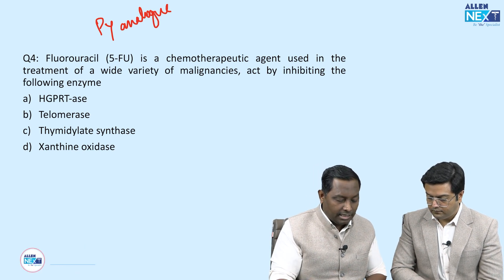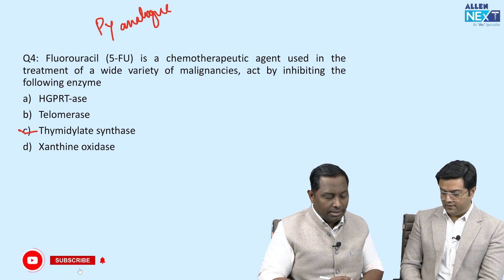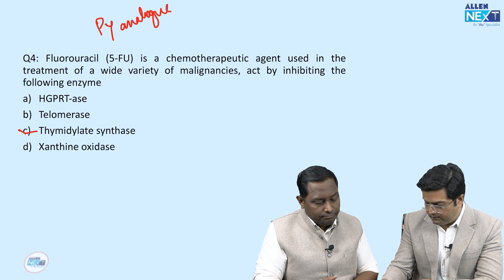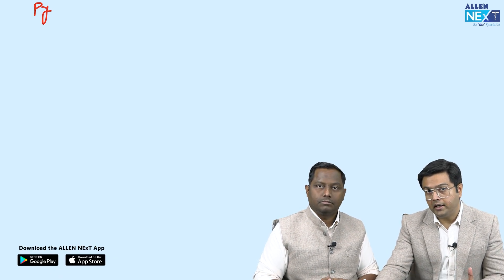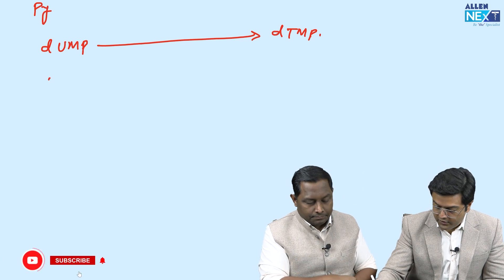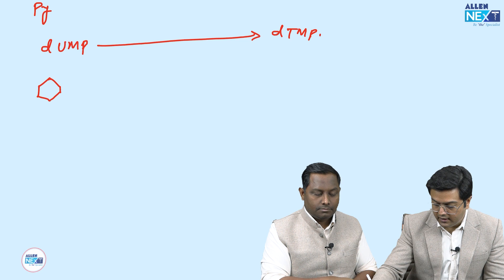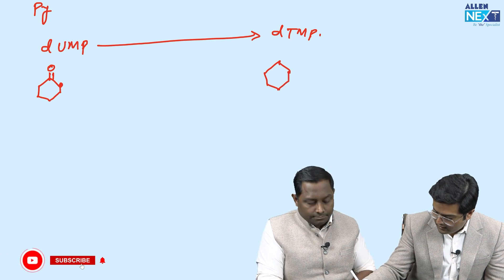The answer is thymidylate synthase. In pyrimidine synthesis, the first product formed is uracil, which is converted into cytosine and thymidine. Thymidine is required for DNA synthesis. Taking dUMP (deoxyuridine monophosphate), it must be converted into thymidine monophosphate. The difference between uracil and thymidine is a methyl group on the fifth carbon of the pyrimidine ring.